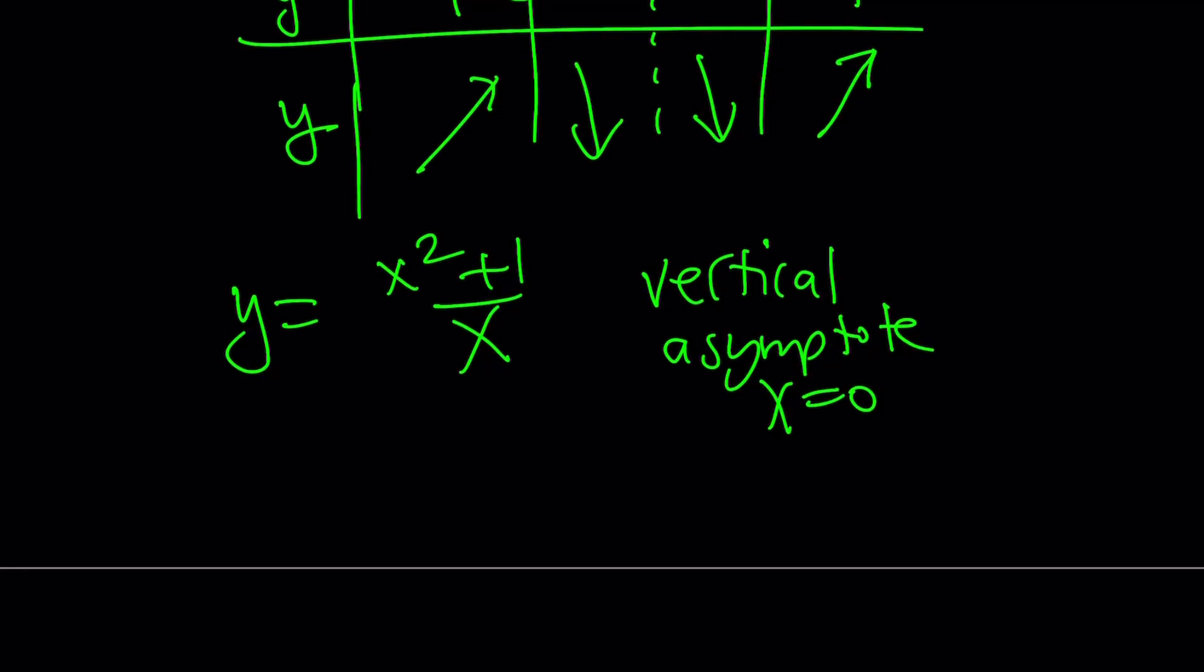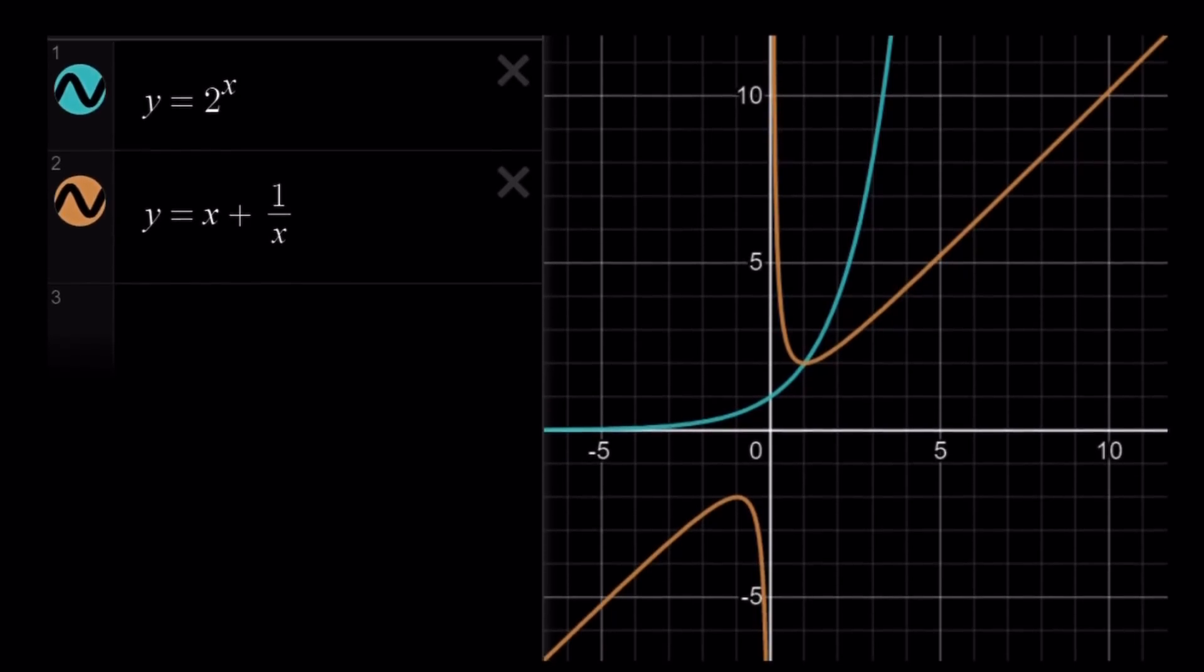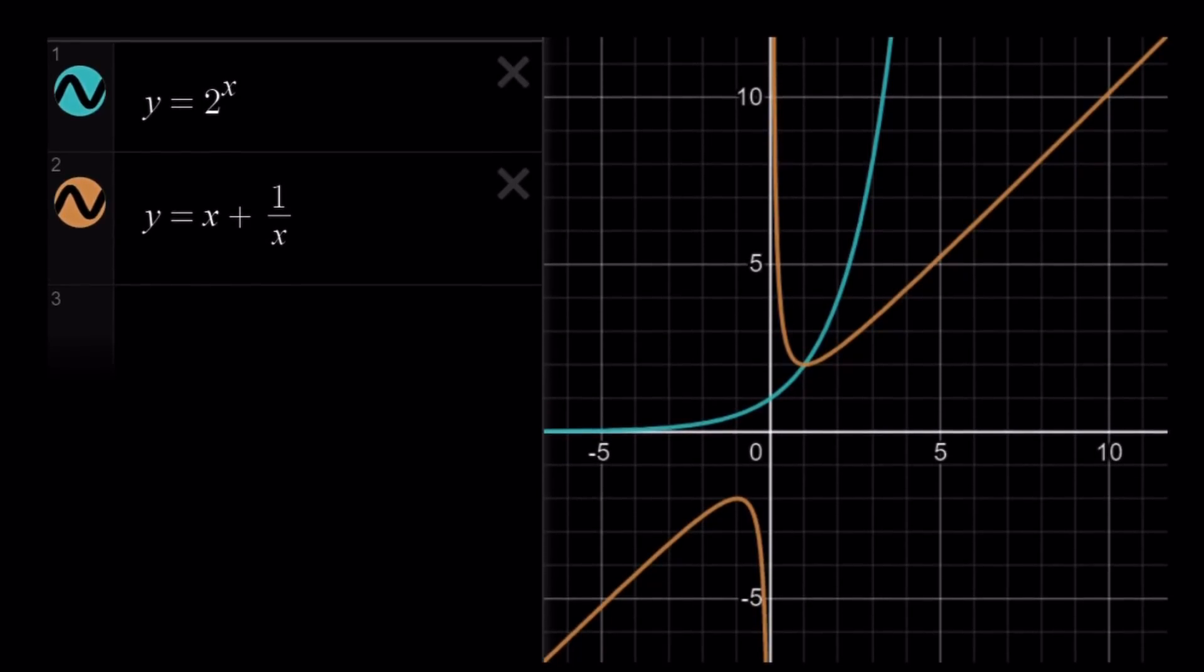Vertical asymptote at x equals 0 because that's where the function is approaching positive or negative infinity. So we're going to have, in other words, we're going to have a maximum here and we're going to have a minimum, but those pieces are going to be not connected. So you're going to see the following. Let me go ahead and show you what the graph looks like after all these things.